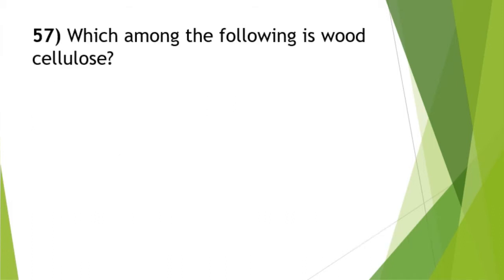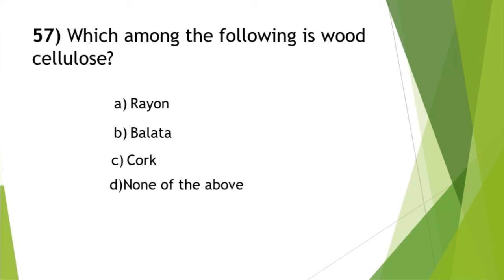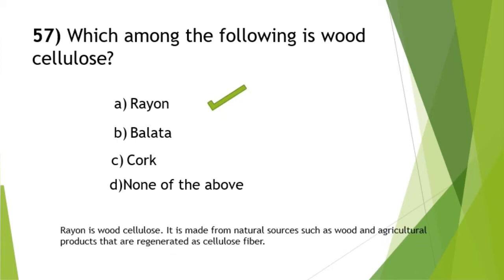Which among the following is wood cellulose? The answer is option A — rayon. Rayon is wood cellulose; it is made from natural sources such as wood and agricultural products that are regenerated as cellulose fiber.